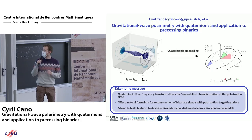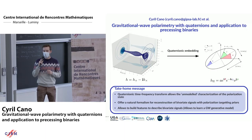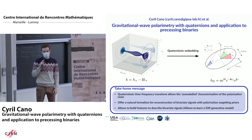Quaternions are a generalization of complex numbers — a complex number algebra in four dimensions. Thanks to this quaternionic embedding, we have access to four features of our signals: A, t, chi, and phi, which describe the shape of the ellipse. With these, we can try to reconstruct gravitational wave signals with polarization-targeting priors, and also use these parameters as features to learn a generative model for gravitational waves, which is of great interest for physicists. I hope to see you Wednesday.